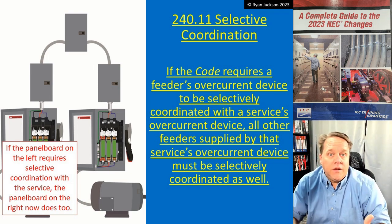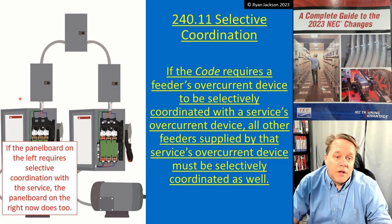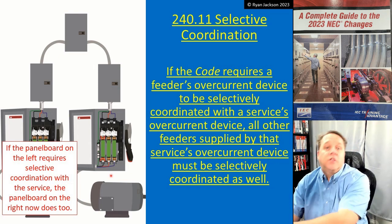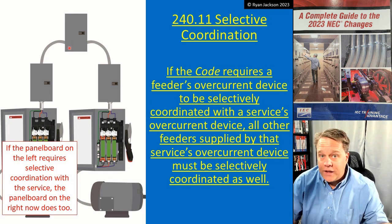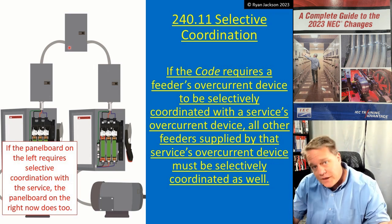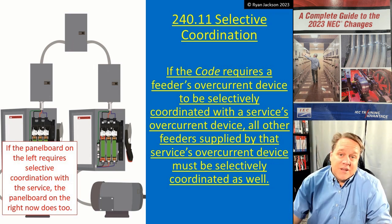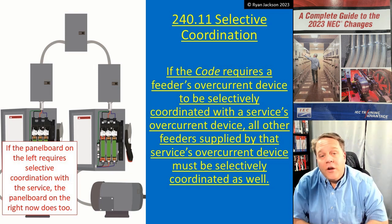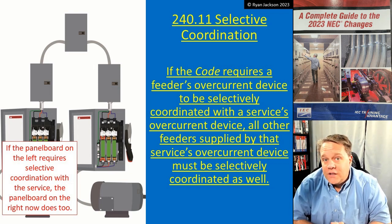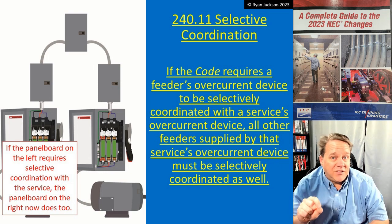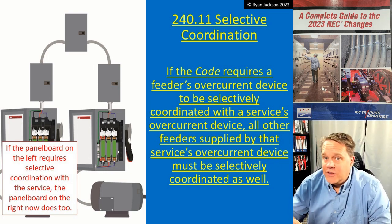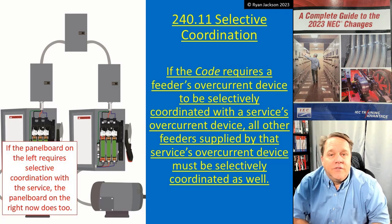There's no point in selectively coordinating the left half of a building if one fault on the right half can knock out everything on the left. It's something maybe we didn't think about in previous versions of the code. So there you go - 240.11 selective coordination. This has the potential to be a big deal if you're in the design world.